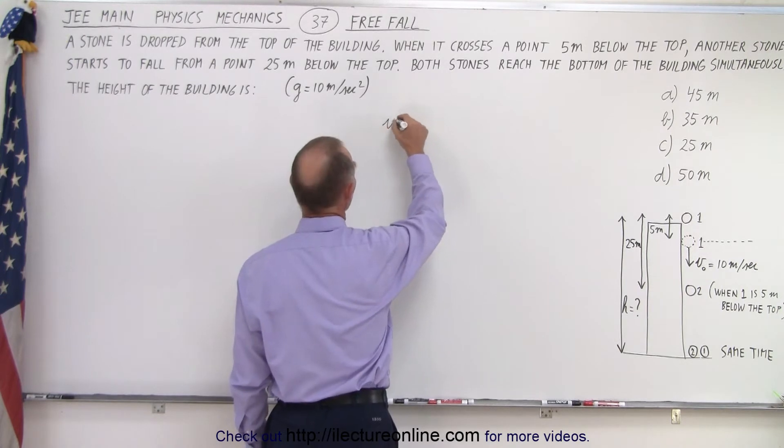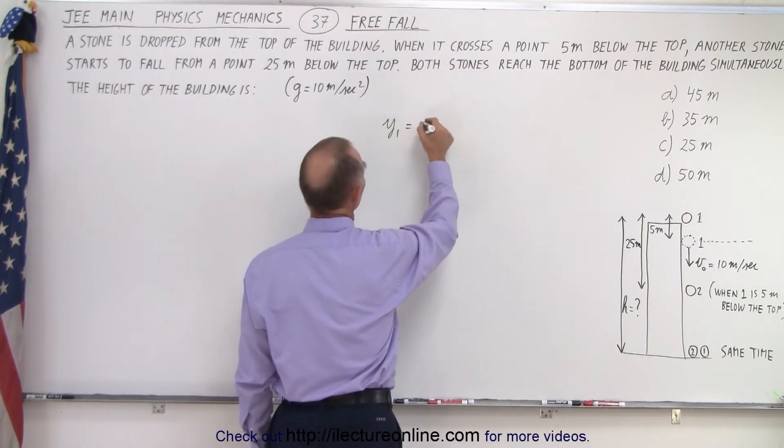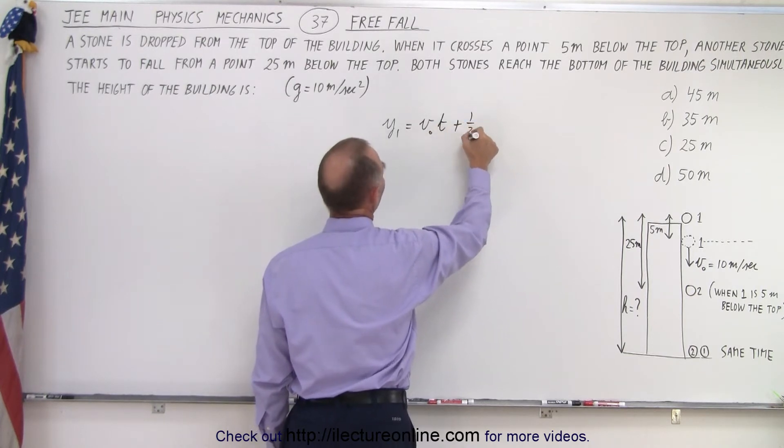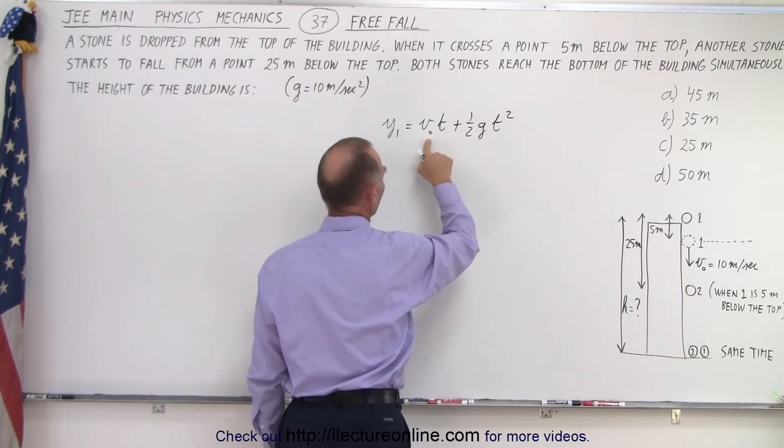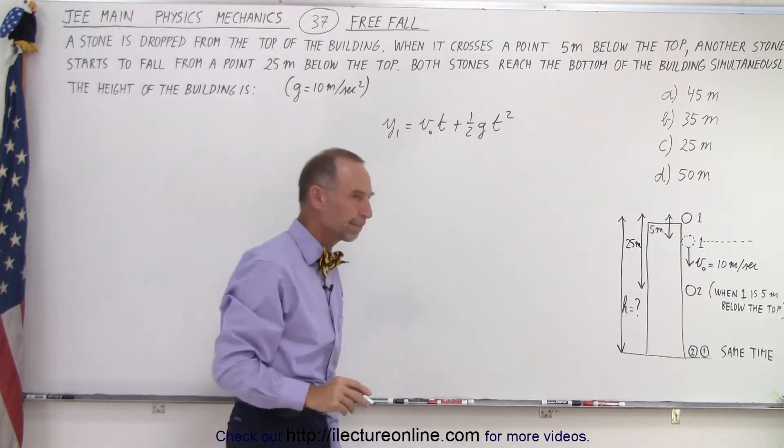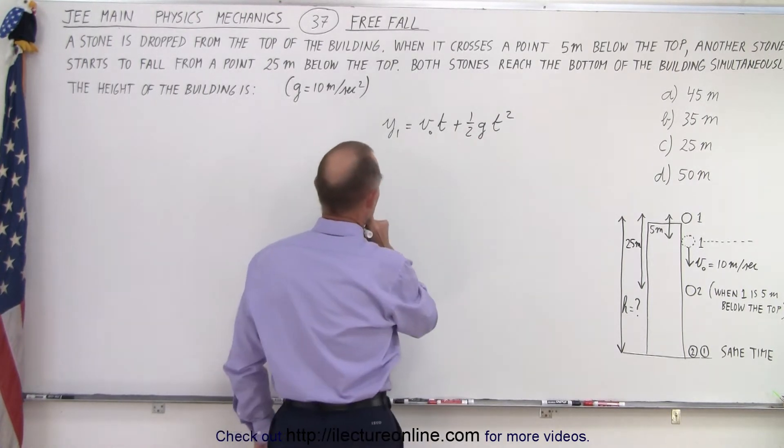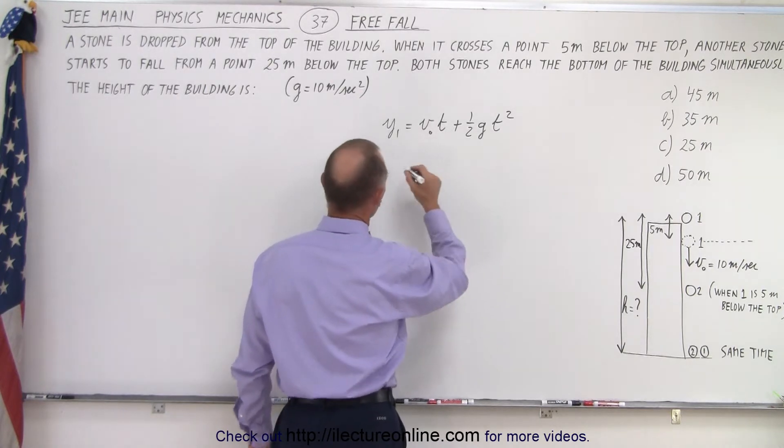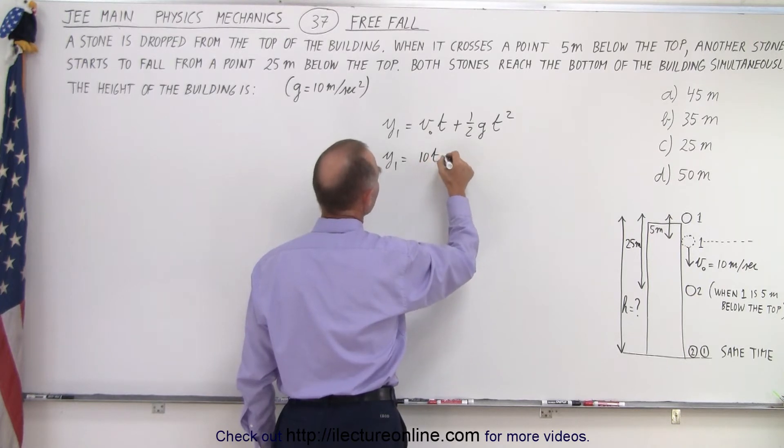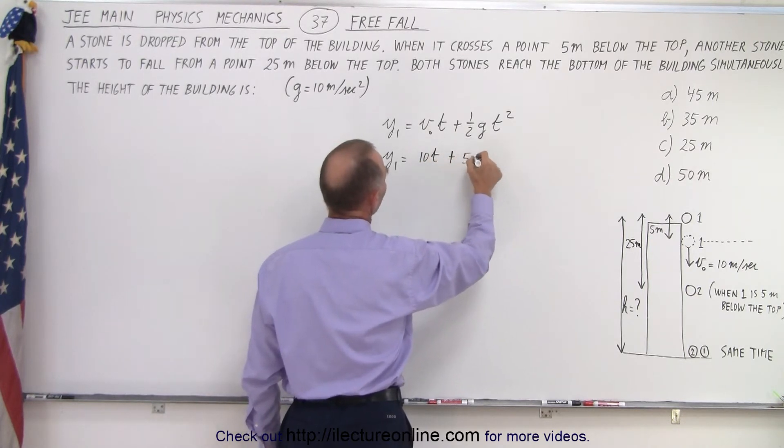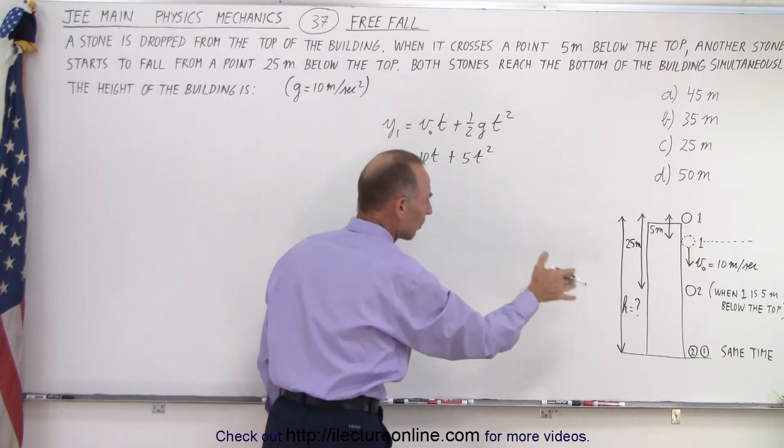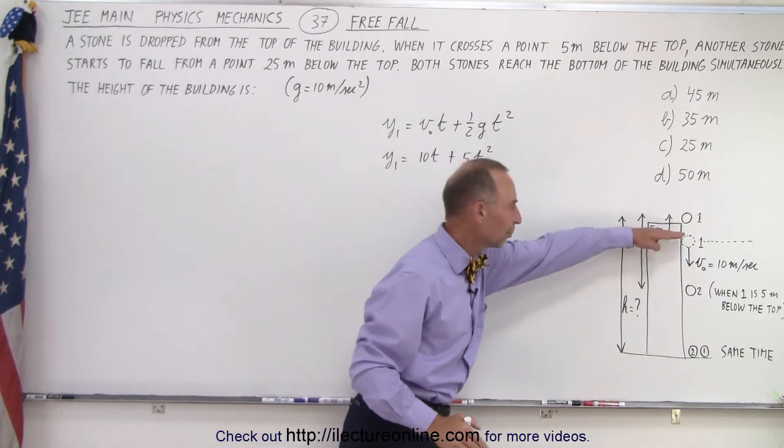We can say that the height dropped for ball 1 is going to be equal to the initial velocity times time plus 1 half g t squared. So, the initial velocity times time plus 1 half the acceleration times time squared. When we plug in some numbers, we get y1 is equal to 10t plus 5t squared. So, that will be the total distance traveled by rock 1 from this point onward.